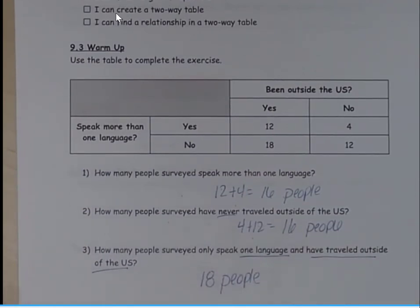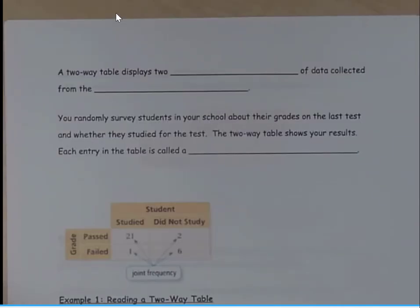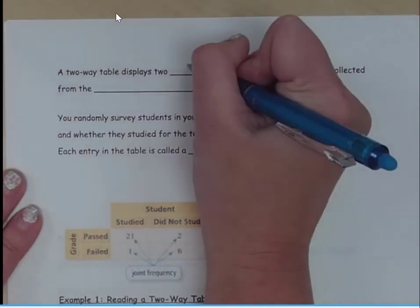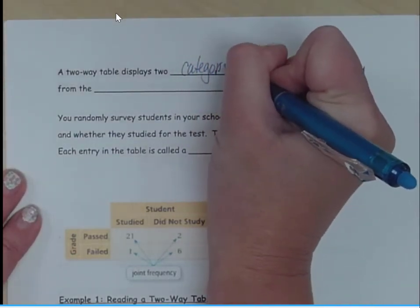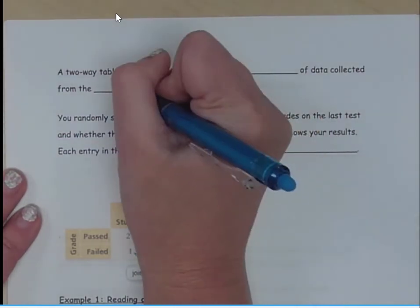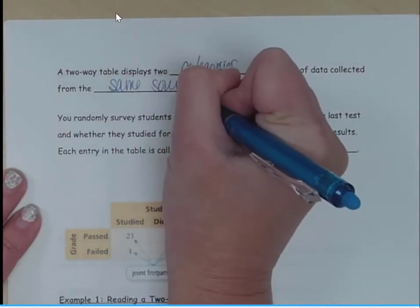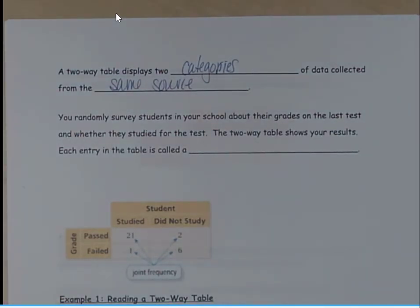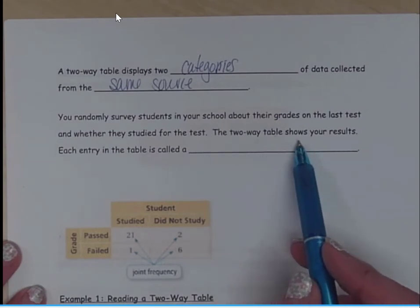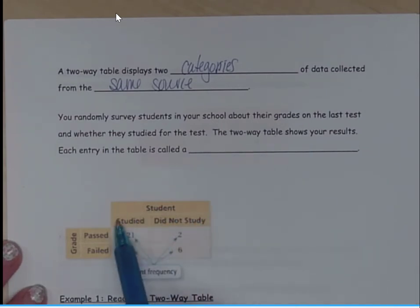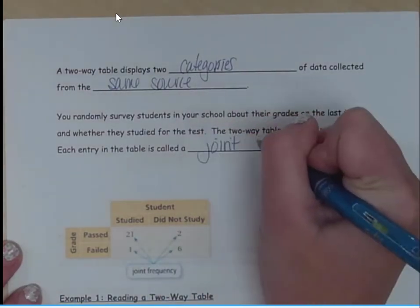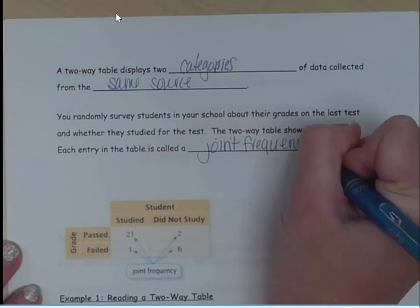All right, let's take a look at our first example. So what is a two-way table? A two-way table displays two categories of data collected from the same source. Each entry is called a joint frequency because it represents two things. 21 students studied and 21 students passed.